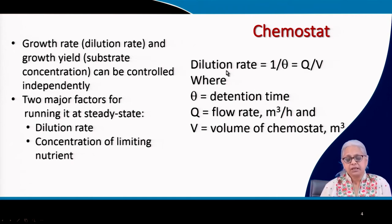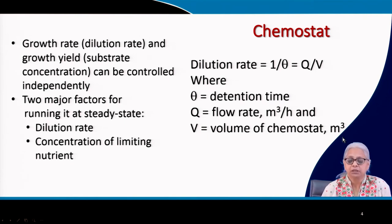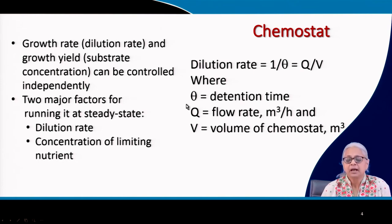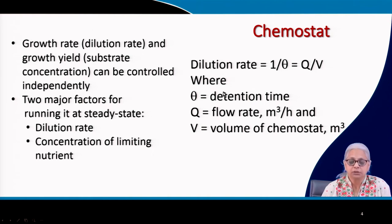What is the dilution rate? Dilution rate is defined as the flow rate divided by the volume of the reactor or chemostat. It can be in liters or cubic meters. Flow rate is in cubic meters per hour or liters per hour, and detention time can be in minutes or hours. Detention time is the reciprocal of dilution rate — it is volume over flow rate — therefore dilution rate is 1 over theta.